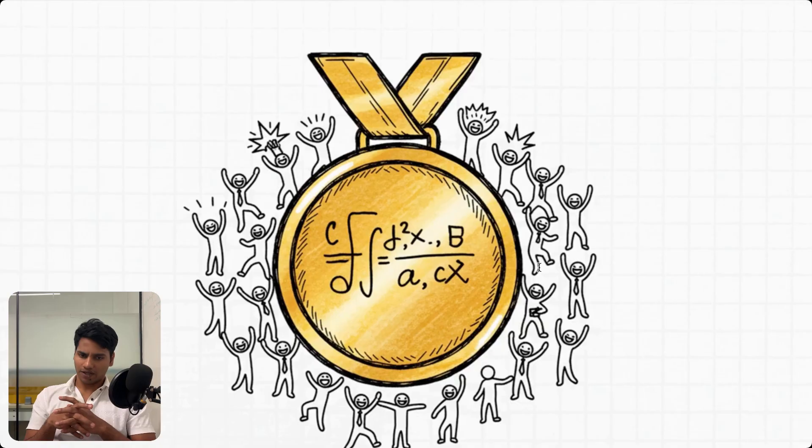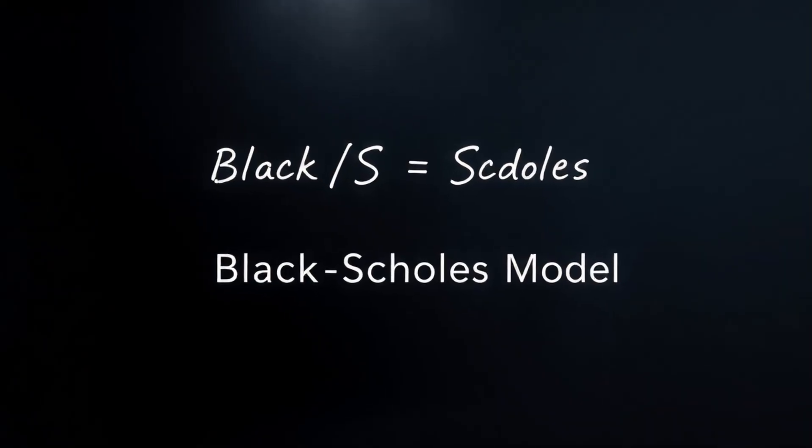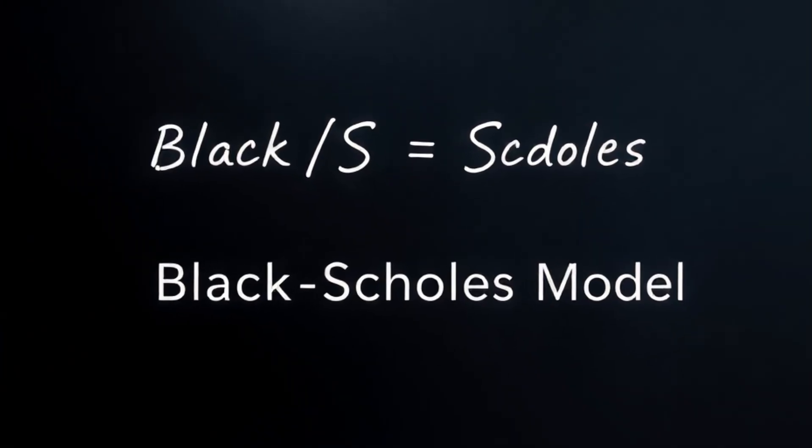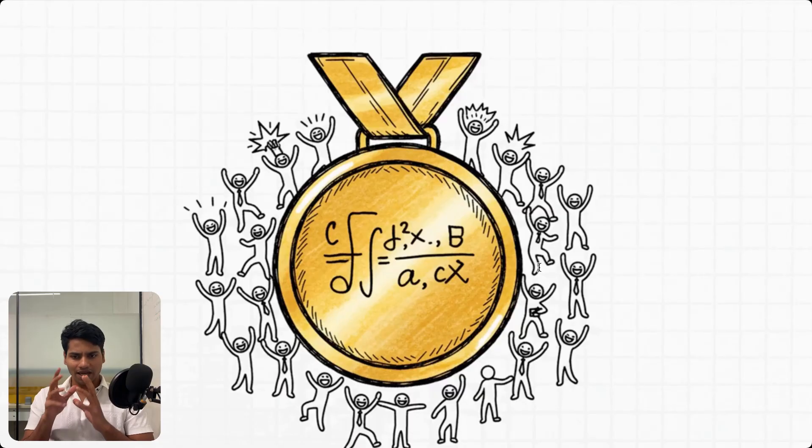And this quest led to some incredible breakthroughs. The most famous by far is the Black-Scholes model. It was this elegant, powerful formula that for decades was the absolute gold standard for figuring out what a financial option should be worth. It felt like a massive win. This huge success created a wave of confidence, maybe even overconfidence.